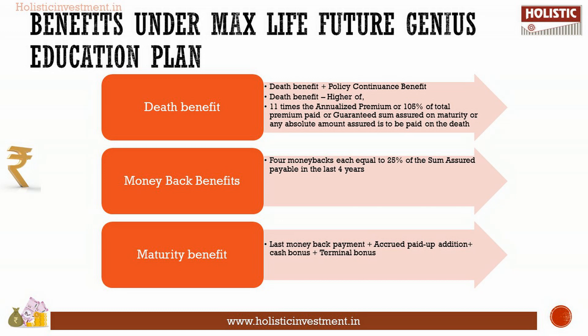Under Max Life Future Genius Education Plan, the death benefit includes a death benefit plus a policy continuance benefit. The death benefit is the higher of: 11 times the annualized premium, or 105 percent of total premiums paid, or guaranteed sum assured on maturity, or any absolute amount assured to be paid on death. Under the policy continuance benefit, all future premiums will be waived and the policy will continue as is.